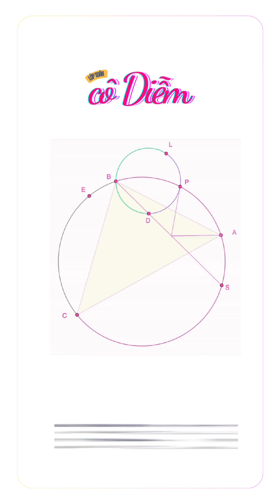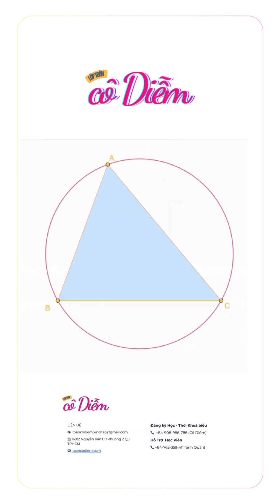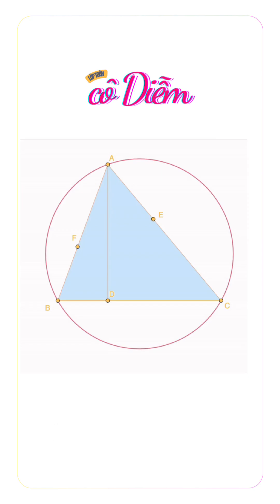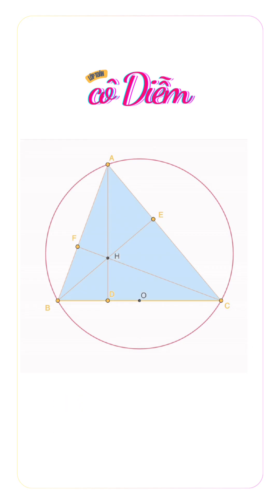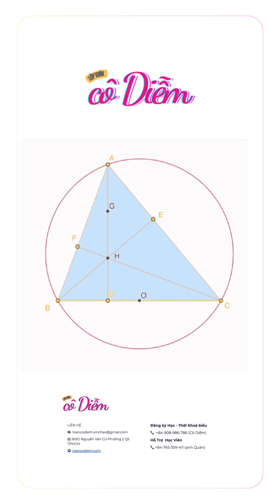An easier, more solvable problem. Given triangle ABC, H its orthocenter, BE and CF its altitudes respectively, O is the midpoint of BC. Let gamma and omega be the circumcircle of triangle AEF and triangle ABC respectively. Part 1: prove OE and OF are tangent to gamma — this is a basic version of IMO 2004 Problem 4.